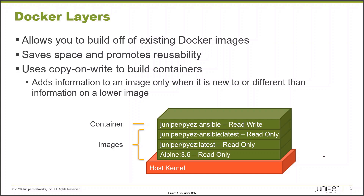You can see that image is based on several previously existing images. First, we have Alpine 3.6 — Alpine is a really popular base image for building Docker containers because it contains a lot of common Linux runtimes but is extremely small and lightweight. Notice that's read-only; we don't want to be modifying that base image used by thousands of containers. On top of that, we have PyEZ installed as its own read-only layer, then the Ansible libraries as their own read-only layer. When we instantiate a container using PyEZ Ansible, we also get access to our own read-write layer.